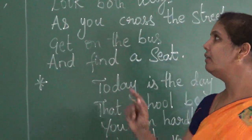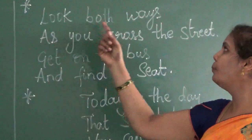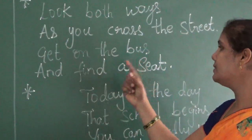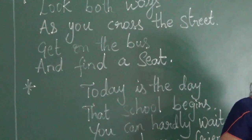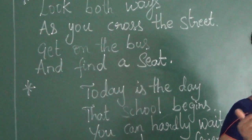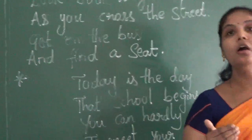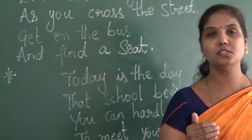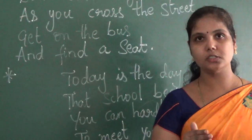Once again I am reading the third stanza: Look both ways as you cross the street. Get on the bus and find a seat. While crossing the road, you should follow the safety rules and see both ways for any vehicles coming. If you don't follow the safety rules, what will happen? Accidents will occur. So you have to follow the safety rules.